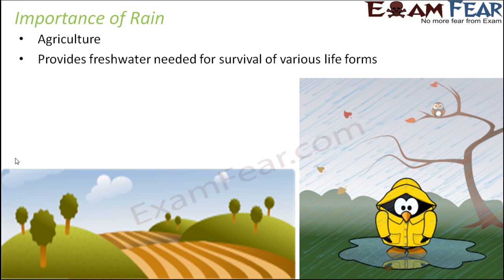Secondly, rain provides fresh water, which is needed for the survival of various life forms. We all need water. From rain we get fresh water directly, because ocean water is salt water — to get fresh water from the ocean we need to remove the salt, which is a long, time-consuming, and costly process. So rain is a direct source of fresh water, and fresh water is needed by different life forms — whether plants, animals, insects, or birds.